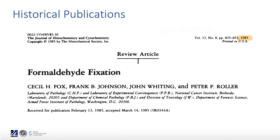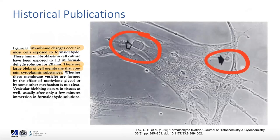Another historical article on formaldehyde fixation is from 1985. In that paper they focused on the differences in sizes of nuclei and cells with or without fixation. Within that article you can also find an image showing blebs coming out of the membrane, consisting of membrane material and liquid from the inside of the cell.